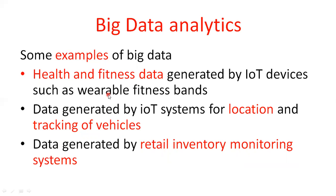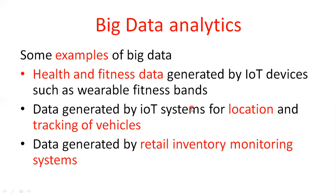Health and fitness data is obtained using wearable devices — health and fitness data generated by IoT devices such as wearables. There is also data generated by IoT systems for location and tracking of vehicle systems, and data generated by retail inventory monitoring systems. These are all examples of big data generated by IoT systems.